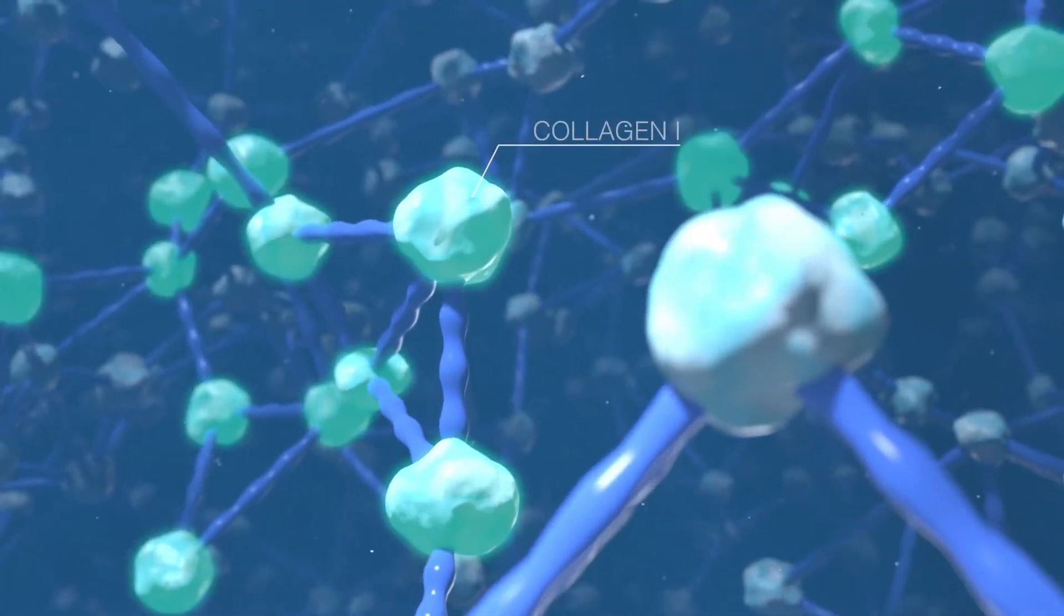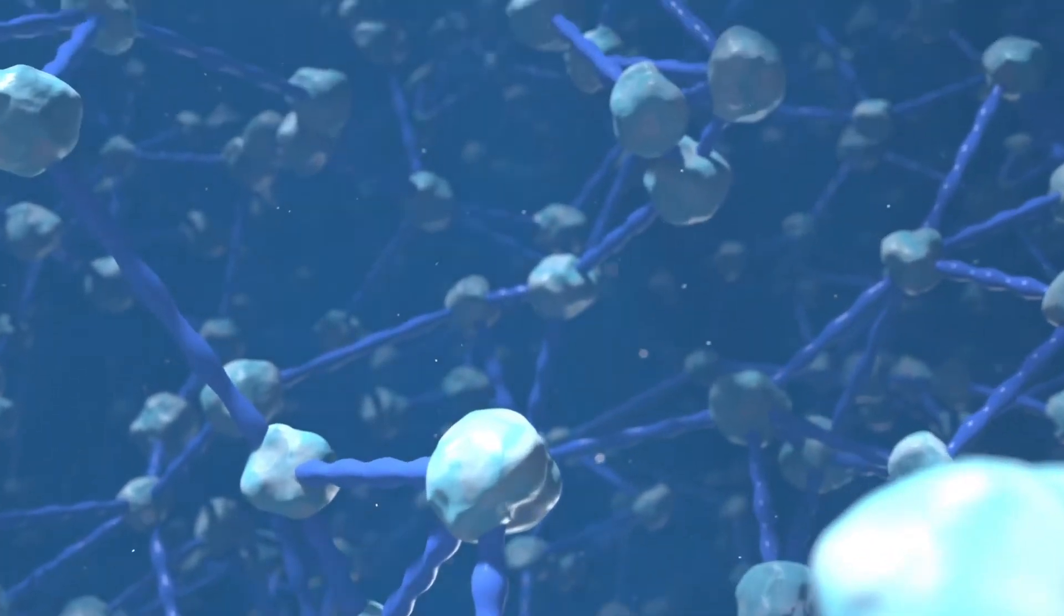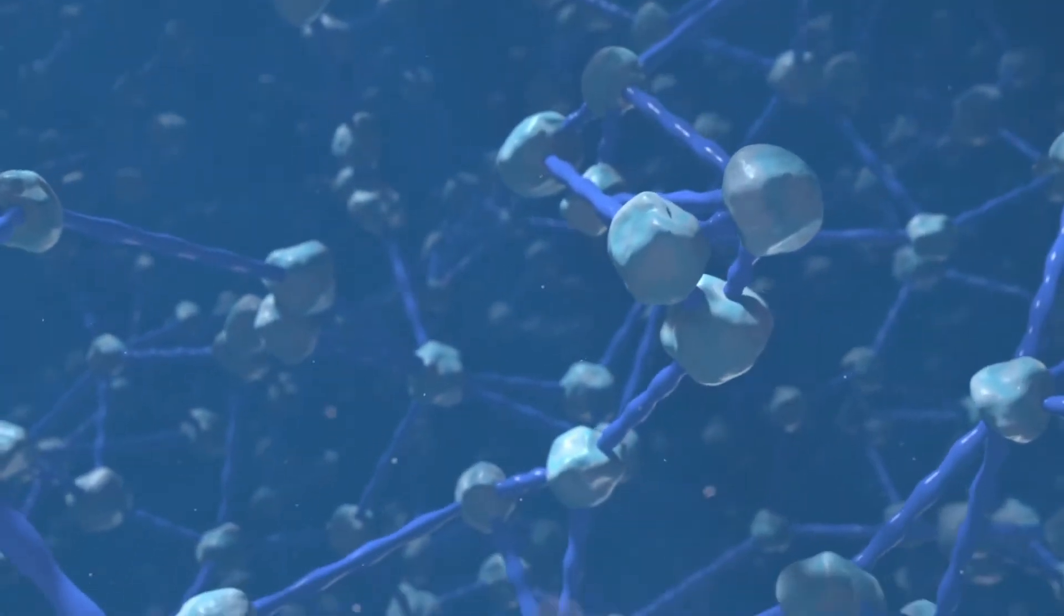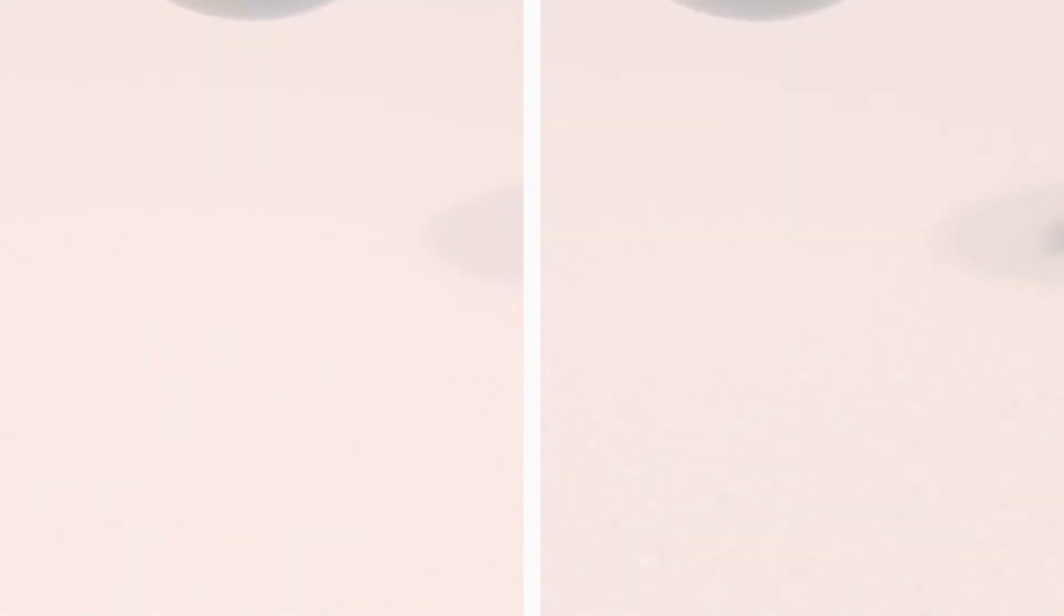There are two types of collagen, Collagen 1 and Collagen 3, that are both equally important. Collagen 3 provides a framework that Collagen 1 binds to. They work together to make your skin bouncy and taut.